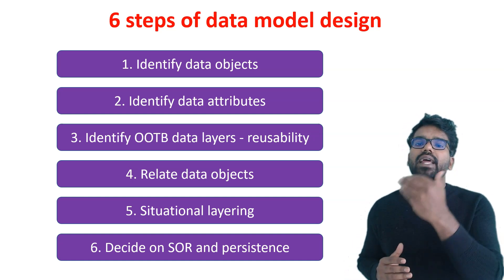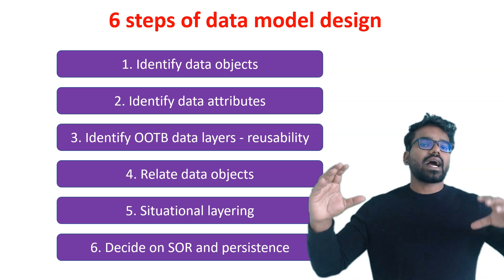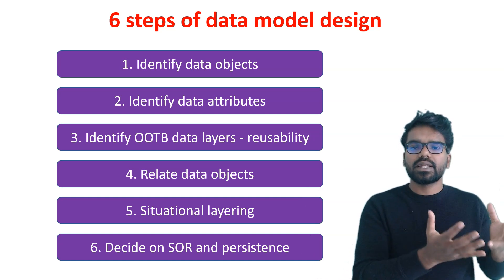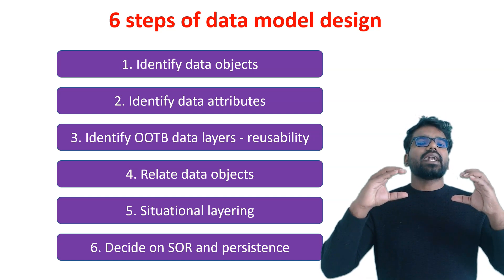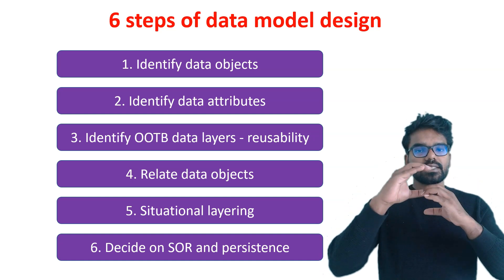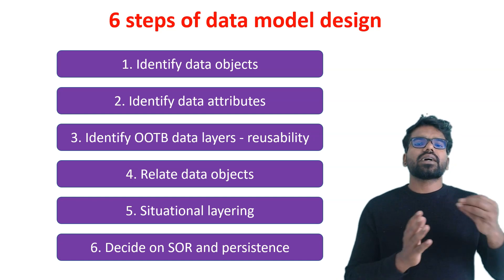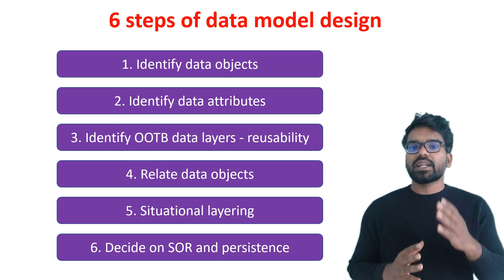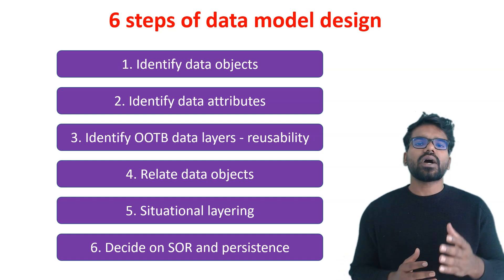As a fourth step, you can relate the data objects. Let's take two data objects: customer and address. Under address you can have the street number, house number, and all other address details. Customer is one data object, address is one data object, and definitely this customer is going to have some address. So there is a link between customer and address. Under the customer data object, you can have address as a page property that maps to the address data object, so it can use all the attributes of the address data object.